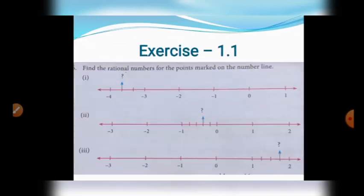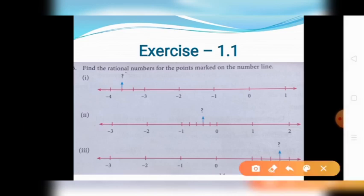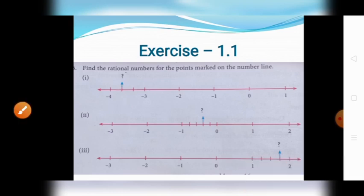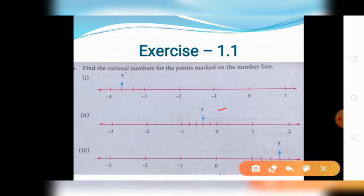Question 1, Chapter 1 - Rational Numbers. For the first subdivision, the point marked on the number line lies between minus 3 and minus 4. The number line is divided into 3 equal parts. The number is represented in the second subdivision.